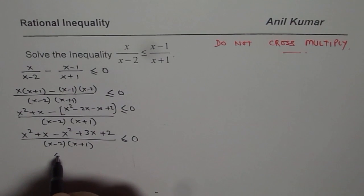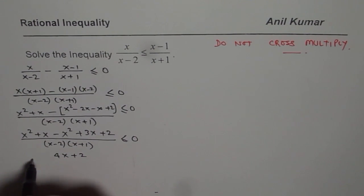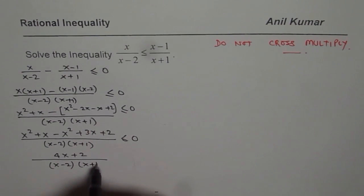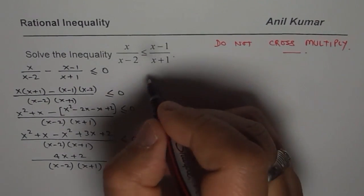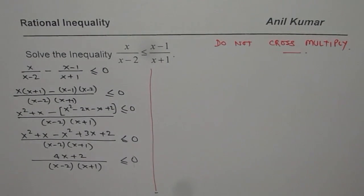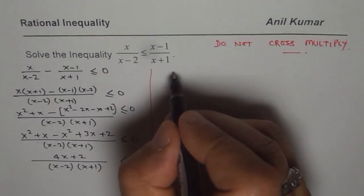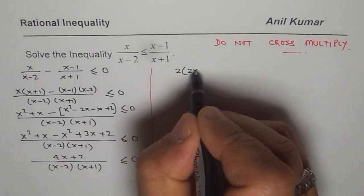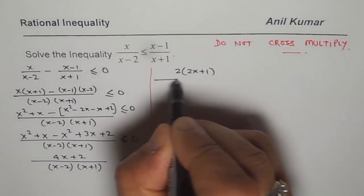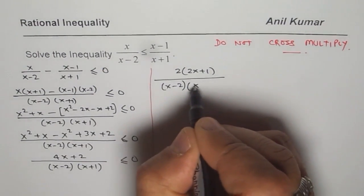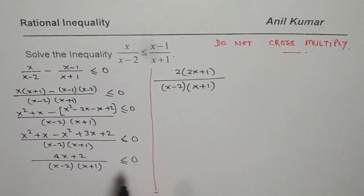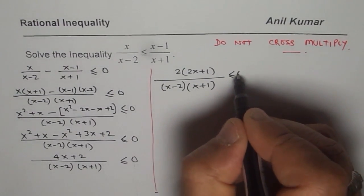x square minus x square is 0. x plus 3x is 4x. So we get 4x plus 2 in the numerator. Denominator is x minus 2 times x plus 1, less than equals to 0. Let us take it to the right side and further simplify. So we can take 2 common in the numerator and so we get 2 times 2x plus 1 and the denominator is x minus 2 times x plus 1. And we are looking for less than equals to 0.